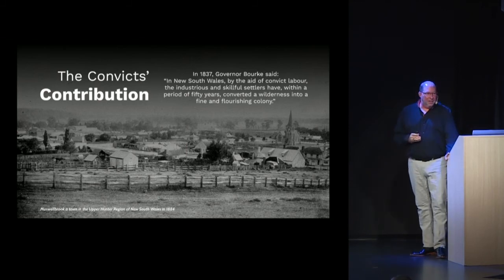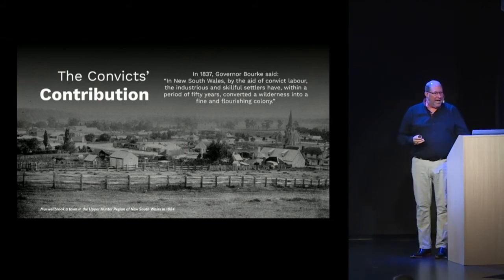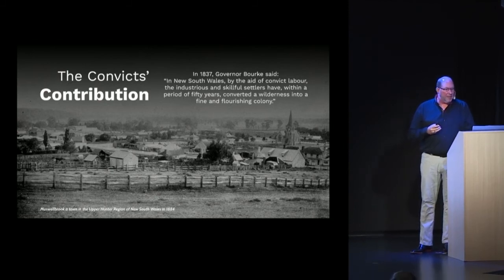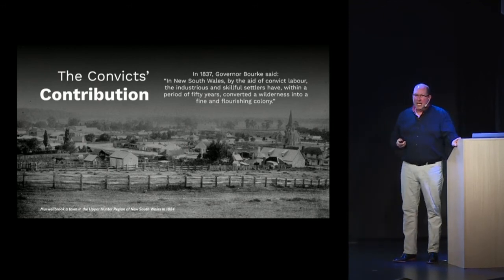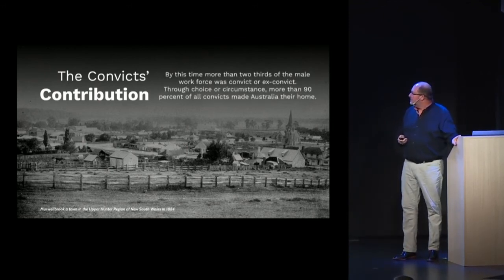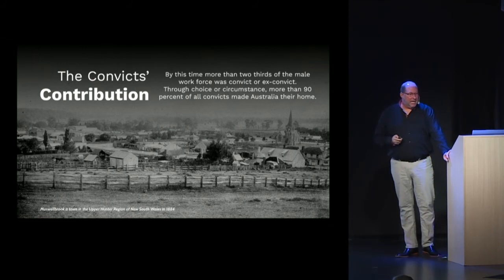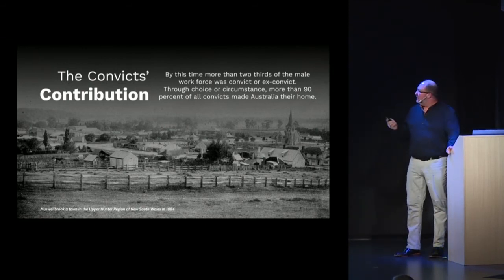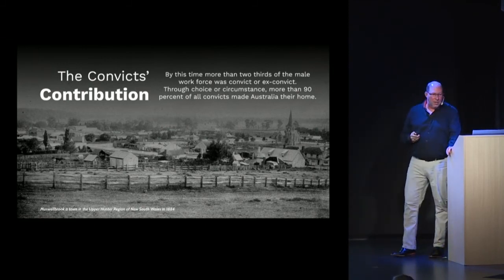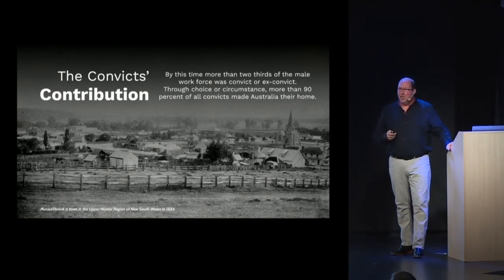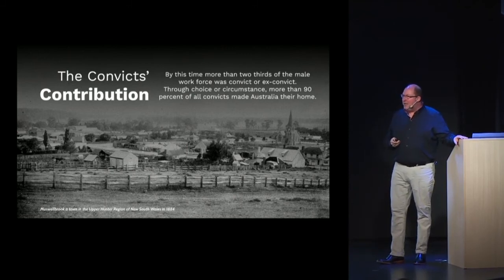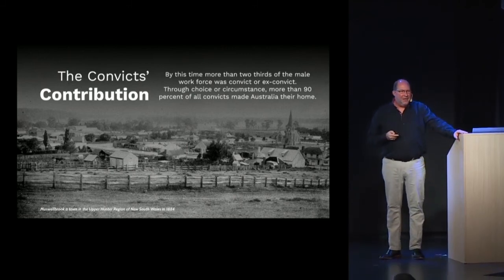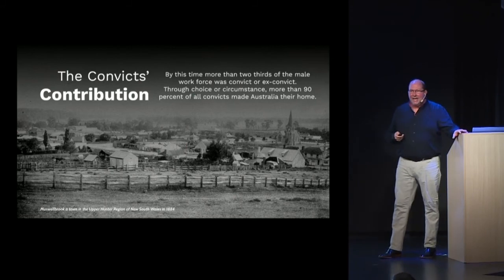In 1837, Governor Bourke said that by the aid of convict labor, the industrious and skillful settlers had, within a period of 50 years, converted a wilderness into a fine and flourishing colony. By this time, more than two-thirds of the male workforce was a convict or ex-convict. More than 80% of these men chose to make Australia their home — after having been there for a period of time, they chose not to return.